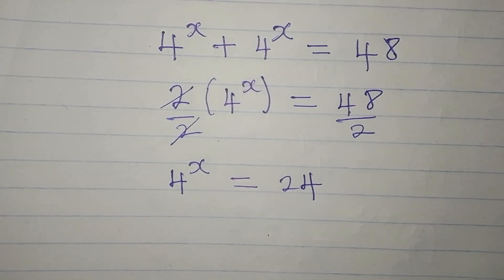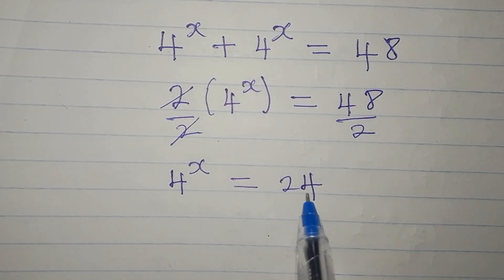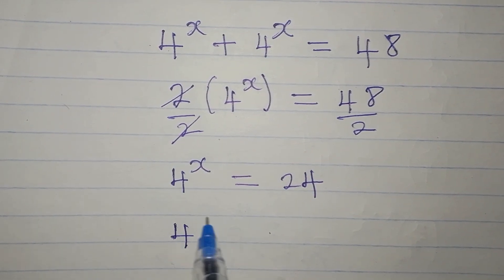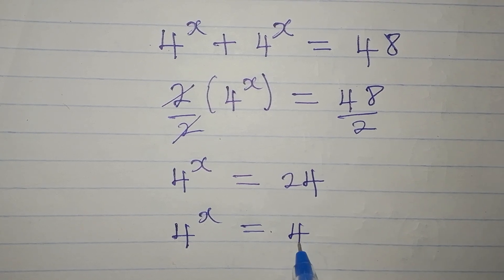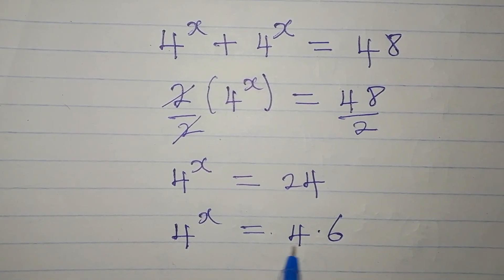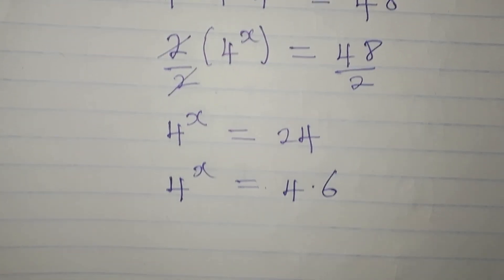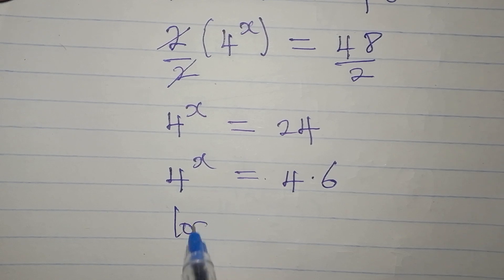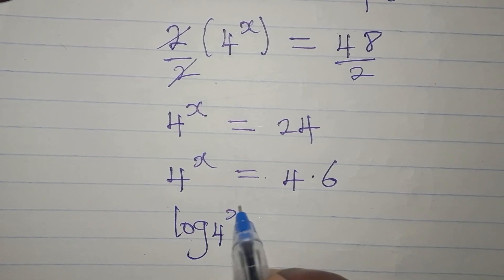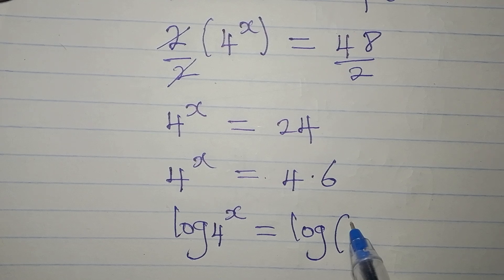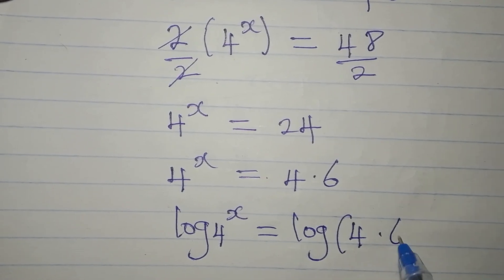Now to go ahead, I'm going to break 24 down to see if it can exist in the form of a power of 4. But it cannot, because 24 is only 4 multiplied by 6. So we'll take the log of both sides, and we will have log of 4 to the power of x equals log of 4 multiplied by 6.